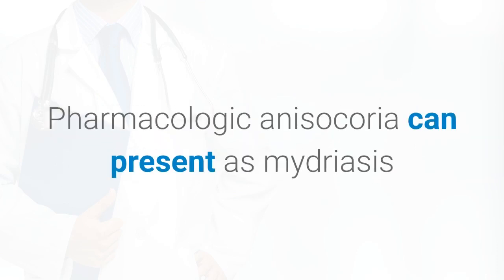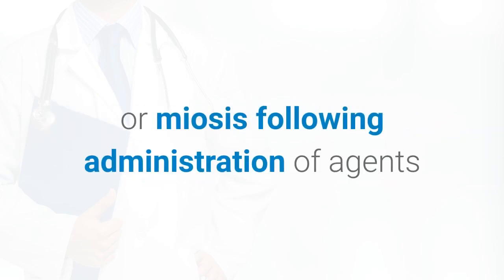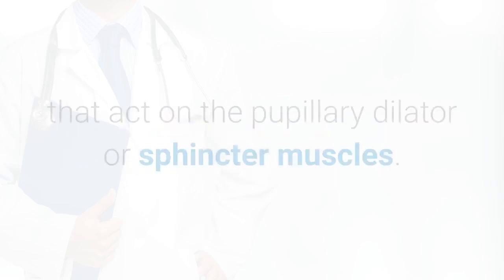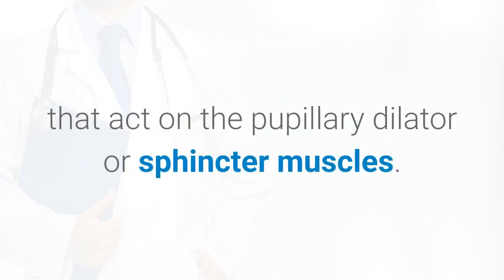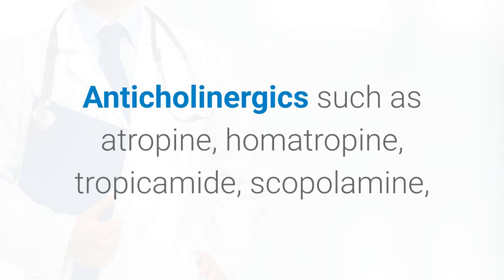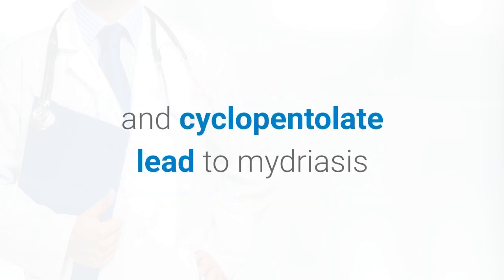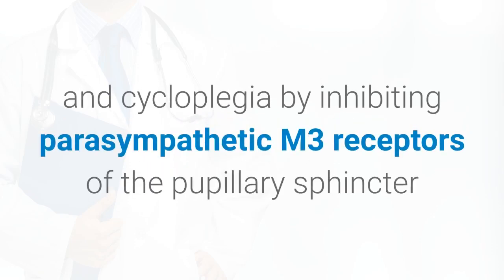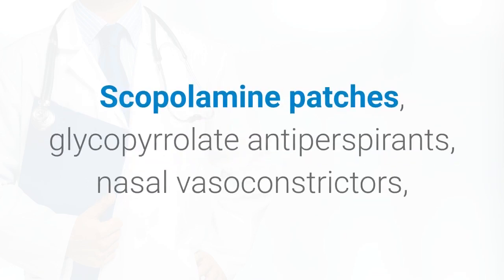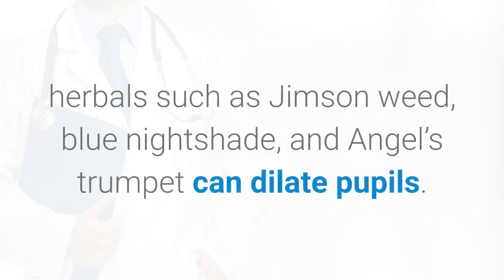Pharmacologic anisocoria can present as mydriasis or miosis following administration of agents that act on the pupillary dilator or sphincter muscles. Anticholinergics such as atropine, homatropine, tropicamide, scopolamine, and cyclopentolate lead to mydriasis and cycloplegia by inhibiting parasympathetic M3 receptors of the pupillary sphincter and ciliary muscles. Scopolamine patches, glycopyrrolate antiperspirants, nasal vasoconstrictors, and herbals such as jimson weed, blue nightshade, and angel's trumpet can also dilate pupils.